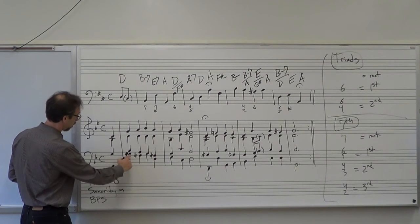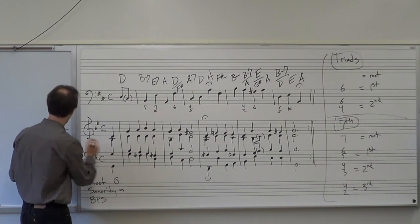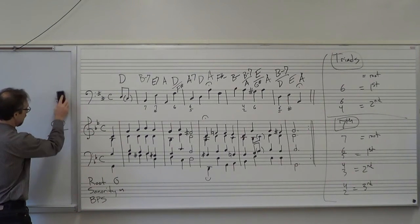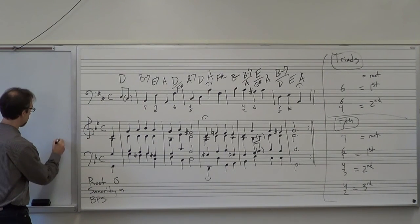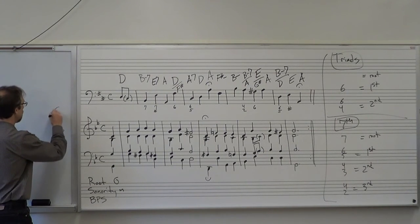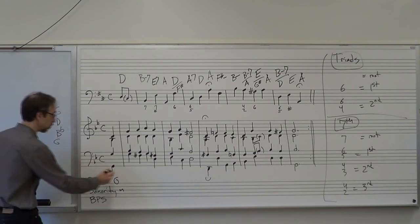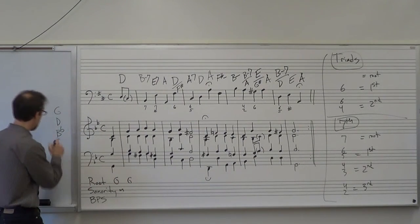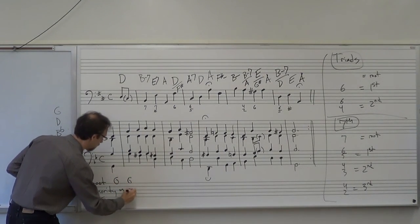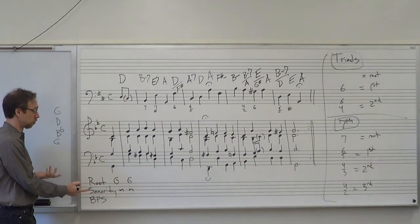This is another G minor triad — the only difference is a different voicing. Now it's G, B flat, D, G in this order, but still the same pitches. The root of the chord is still G, the sonority is still minor, and the base position symbol is still root position.